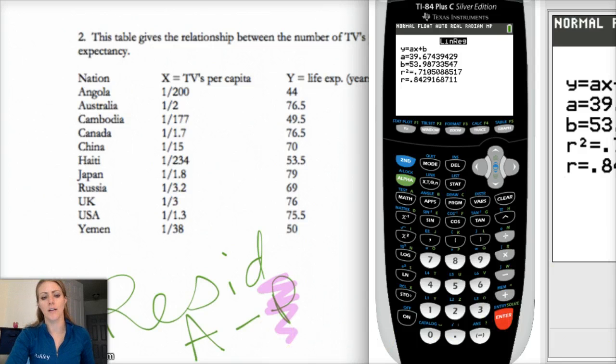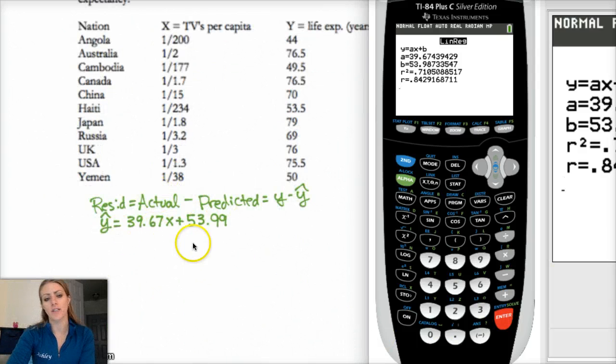And hey, okay, there's my regression line. Okay, so I just wrote it down here so that we have it for reference. But your residual is your actual minus predicted, Y minus Y hat, where Y hat is 39.67X plus 53.99.